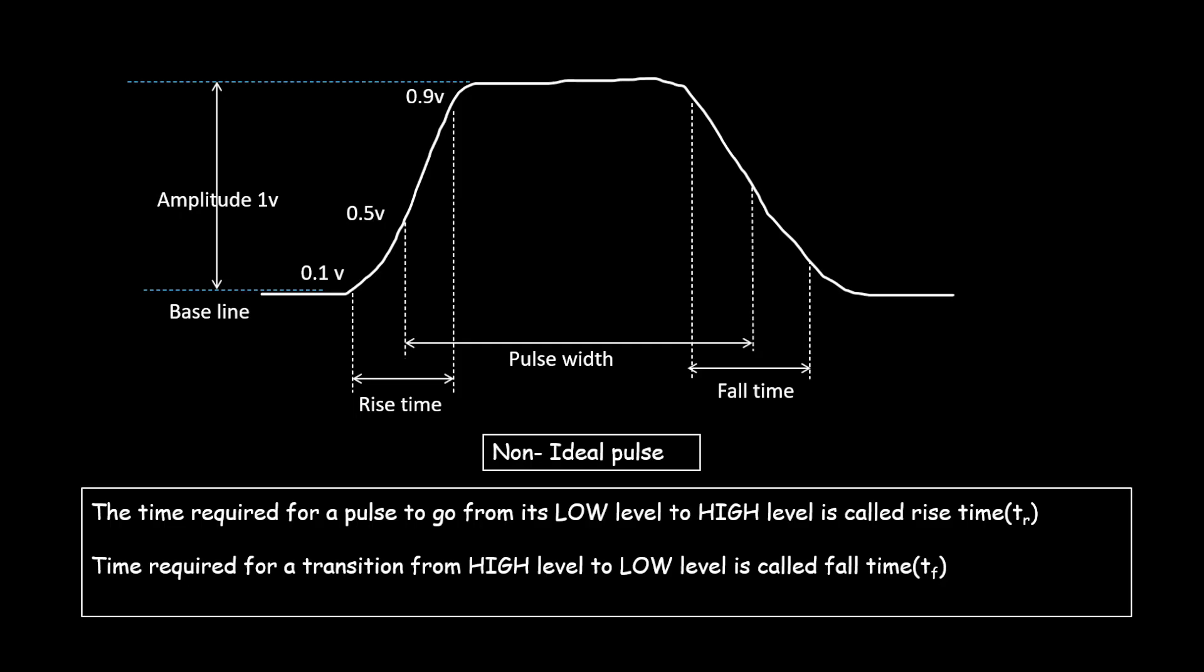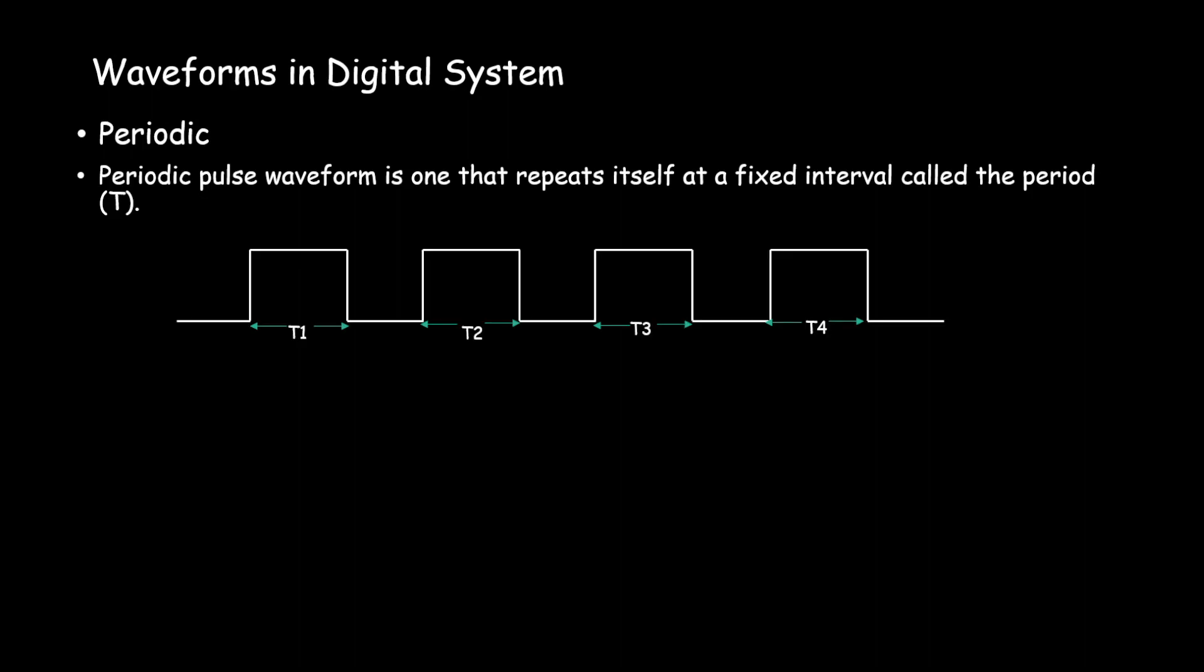Most waveforms encountered in digital systems are composed of a series of pulses and can be classified as either periodic or non-periodic. A periodic pulse waveform is one that repeats itself at a fixed interval called the period T. Here you can see a periodic waveform repeating at a fixed time interval of T, where T1 equals T2 equals T3 equals T4 equals Tn.